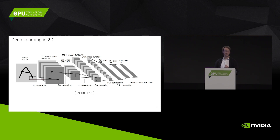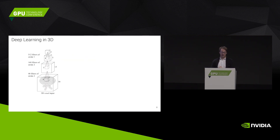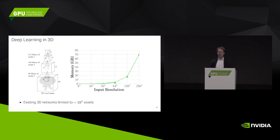The naive way, as in the VoxNet approach, is to simply use 3D convolutions instead of 2D convolutions. So here's a 3D ConvNet with convolutions and pooling operations stacked on top of each other. But the problem is that it doesn't scale very well. If you look at memory in gigabytes versus input resolution, with a Titan X you can only process resolutions up to 64 cube, which is clearly not enough for 3D reconstruction applications.